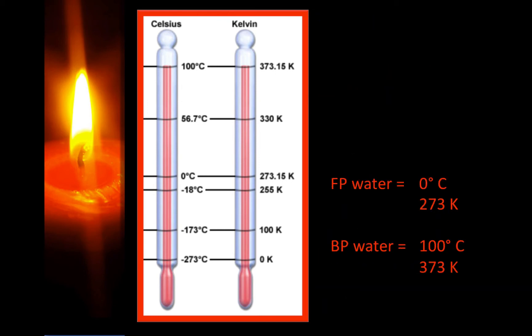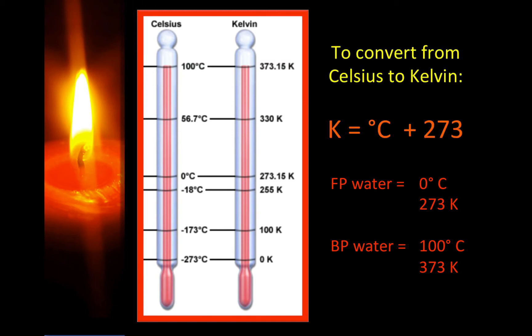Looking at these thermometers, the freezing point of water is zero degrees Celsius, which is equivalent to approximately 273 Kelvin. The boiling point of water, 100 degrees Celsius, is equivalent to 373 Kelvin. To convert from Celsius to Kelvin, take the Celsius temperature and add 273 to it.